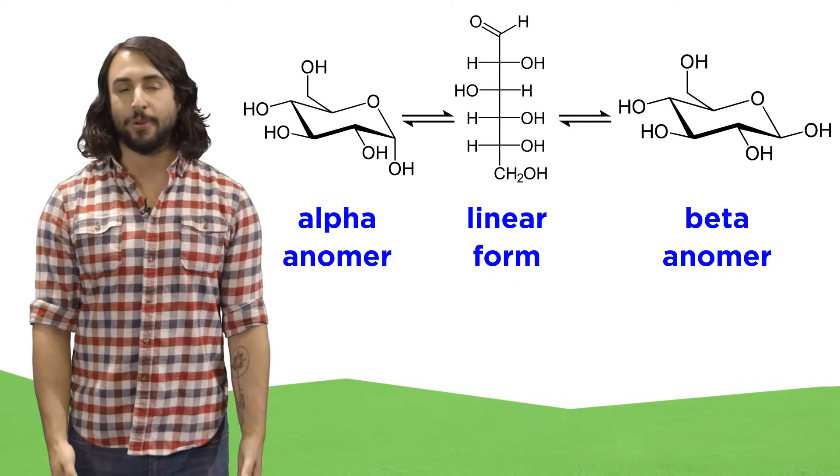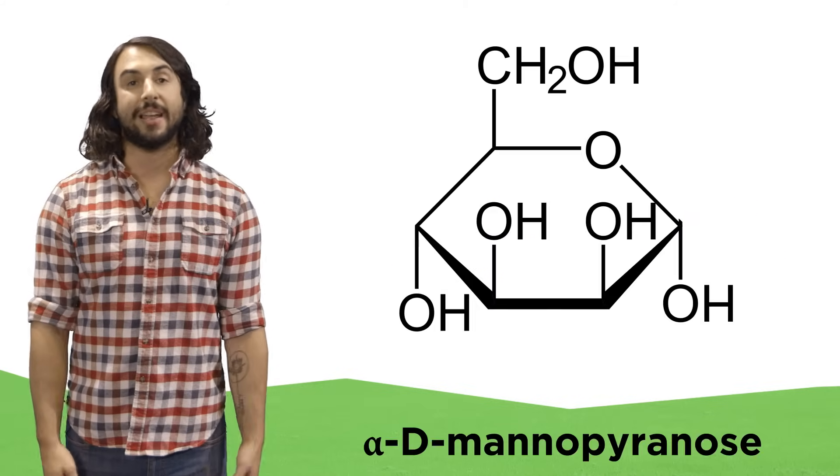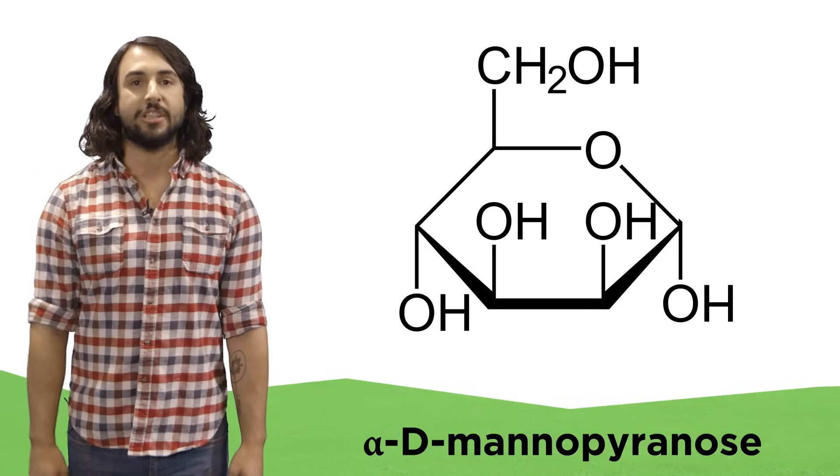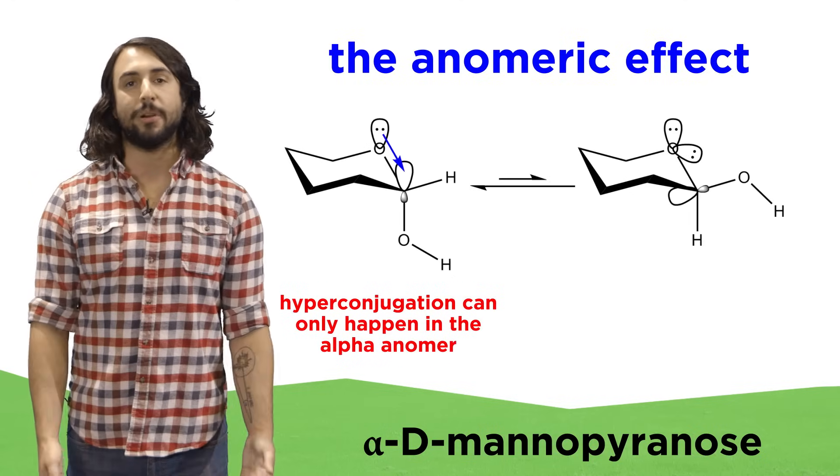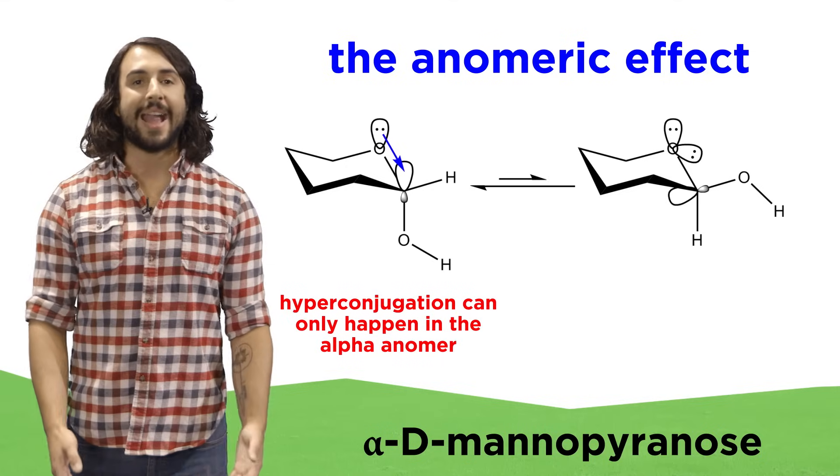A sugar will not always prefer the beta anomer. In some sugars, like mannose, the alpha anomer is preferred due to reasons of hyperconjugation that we call the anomeric effect.